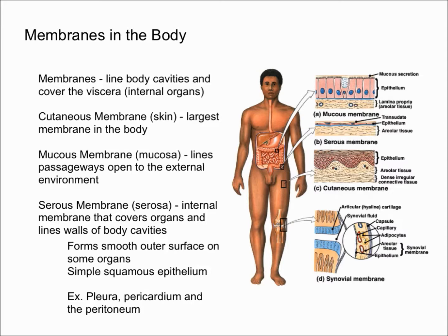Some examples of where you'll find the serosa include the pleura, which is the membrane around the lungs; the pericardium, which surrounds your heart; and the peritoneum, which is a membrane that lines the cavity of your abdomen.